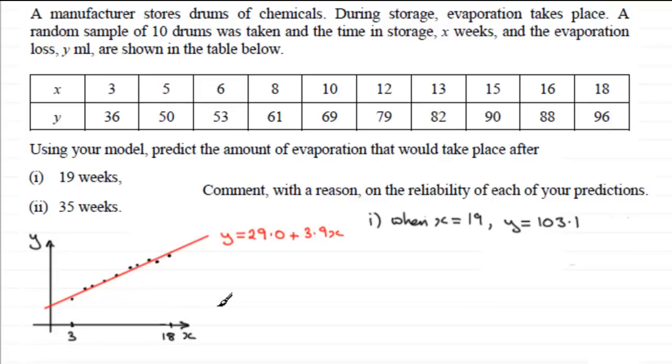What we can't be sure of is the behaviour of the model when we go outside of this range. For instance what happens when x is more than 18, does the graph go up in that direction or does it go like this? And what happens when you take values of x below 3? I would have thought that if the drum had been stored for 0 days then the evaporation would be 0.